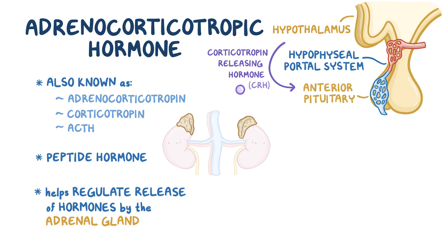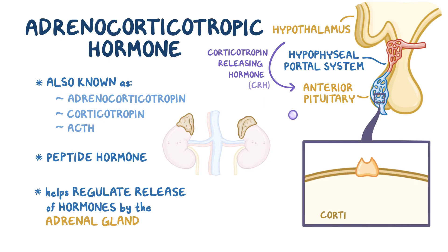In the anterior pituitary, there are many different types of cells, each responsible for producing a type of hormone. The corticotropin-releasing hormone binds to a surface protein of one of these cell types, called corticotroph cells, and stimulates them to release ACTH.